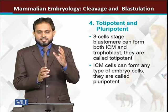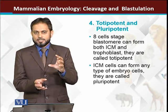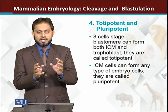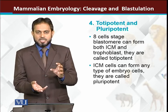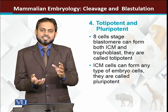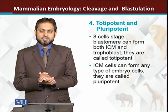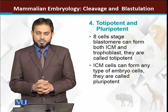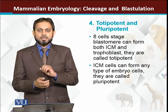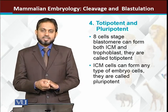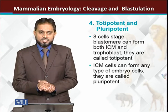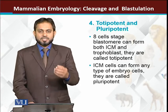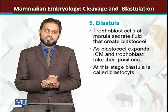When the embryo was at the eight-cell stage and then became sixteen cells, some of those cells can form either the inner cell mass or the trophoblast. The blastomeres above the eight-cell stage can form either structure, which is why they are called totipotent cells. The cells of the inner cell mass, however, can go on to form different embryonic layers — so inner cell mass cells are called pluripotent cells.